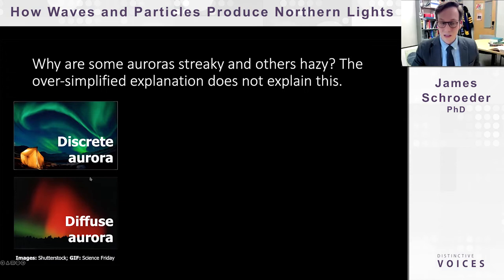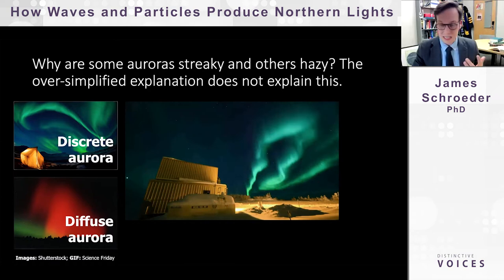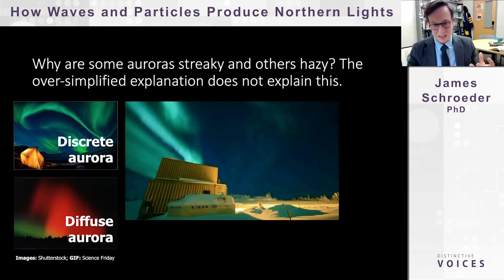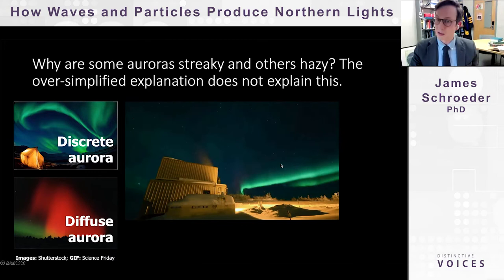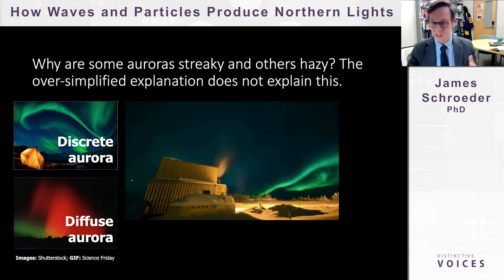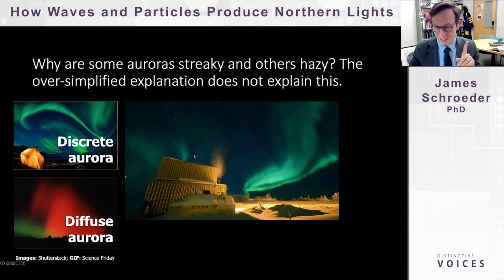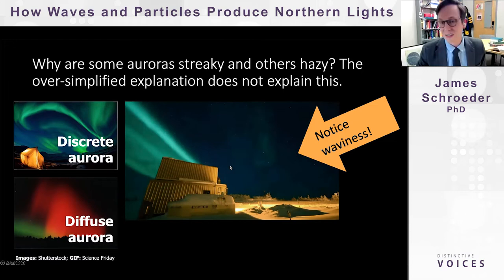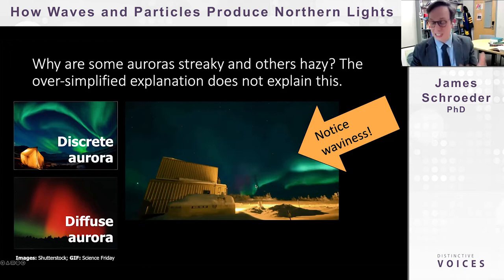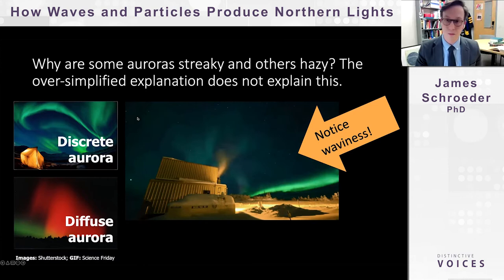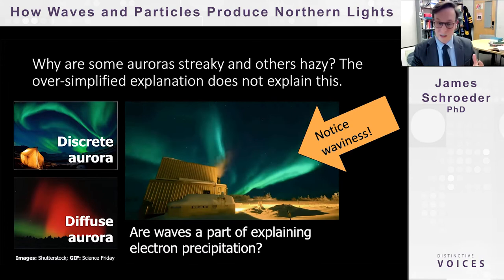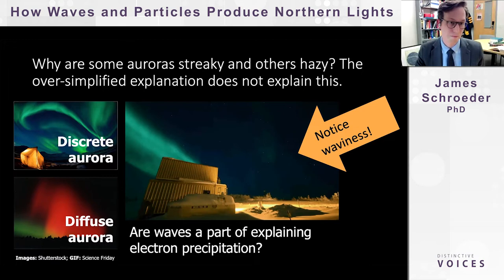The distinction is even more apparent in time-lapse video of discrete auroras. Words that come to mind include variations in space and time, periodicity, and ripples — all words associated with waves. Notice the waviness present here. As we seek to expand our oversimplified explanation, we should consider whether waves are part of explaining electron precipitation.